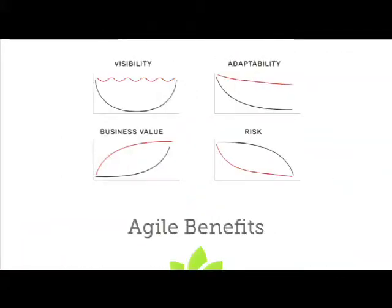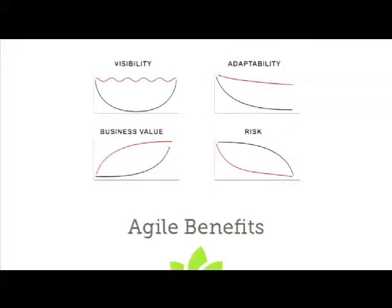The benefits are clear on a chart comparing agile versus traditional. Visibility: with agile we know where we are all the time; with traditional we think we know everything at the start, then see nothing, and hopefully know where we are at the end. Adaptability is obvious. Business value: we deliver stuff right away with agile; with traditional everything is delivered at the end, hopefully. Risk goes down all the time with agile.